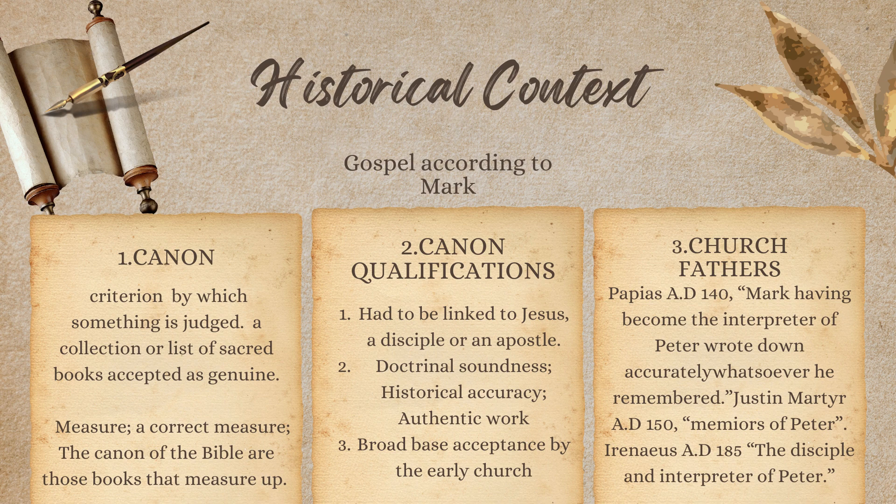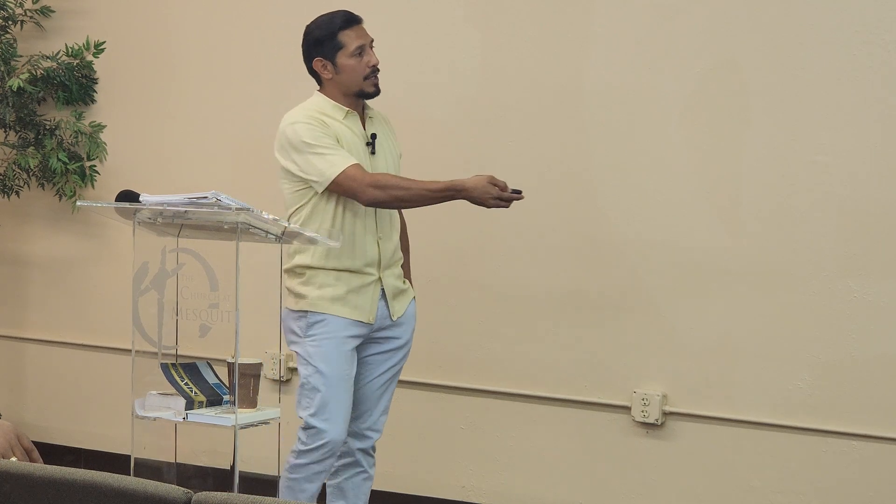Papias in AD 140 said about the Book of Mark: 'Mark, having become the interpreter of Peter, wrote down accurately whatsoever he remembered.' Justin Martyr in AD 150 wrote that these were the memoirs of Peter. And Irenaeus in AD 185 wrote 'the disciple and the interpreter of Peter.' These were all men who would claim and proclaim that the Gospel of Mark was very much accurate and authentic — and it couldn't be disputed.